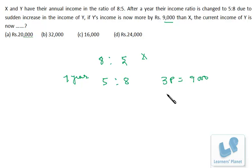And income, so 1 part will be 3,000. Income of Y is 8 parts. So if 1 part is 3,000, 8 parts will be 24,000, right? So we don't require the previous data.